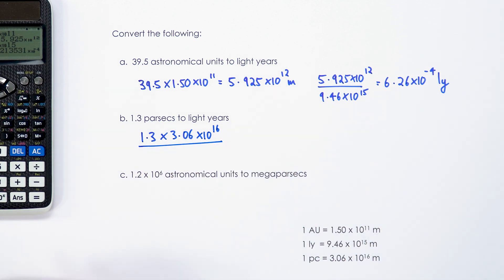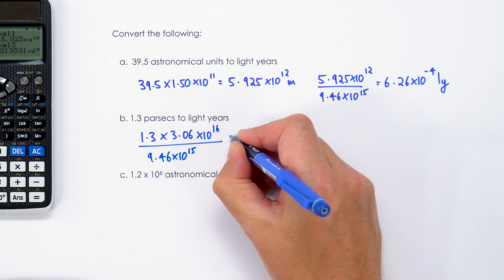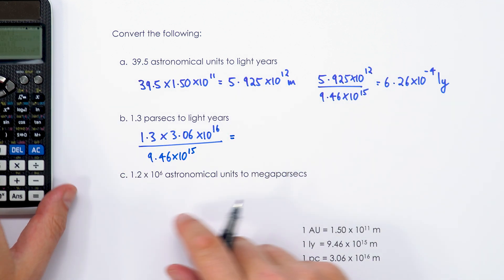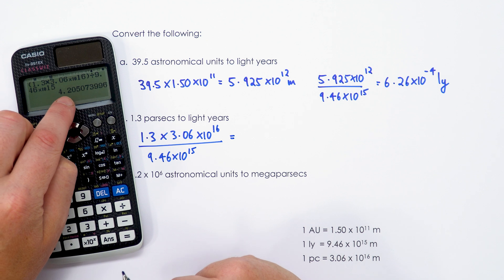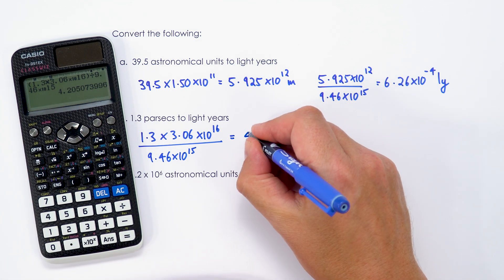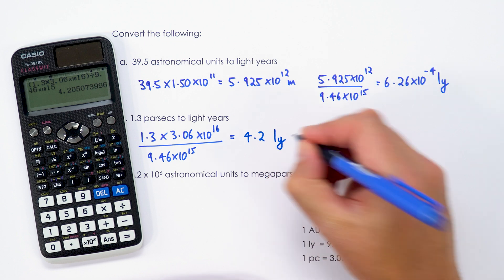And we can basically do that all in one go. So that's 9.46 times 10 to the 15. And when we do the calculation, we get an answer of 4.205. So I think 4.2 is an appropriate answer, and that's 4.2 light-years.